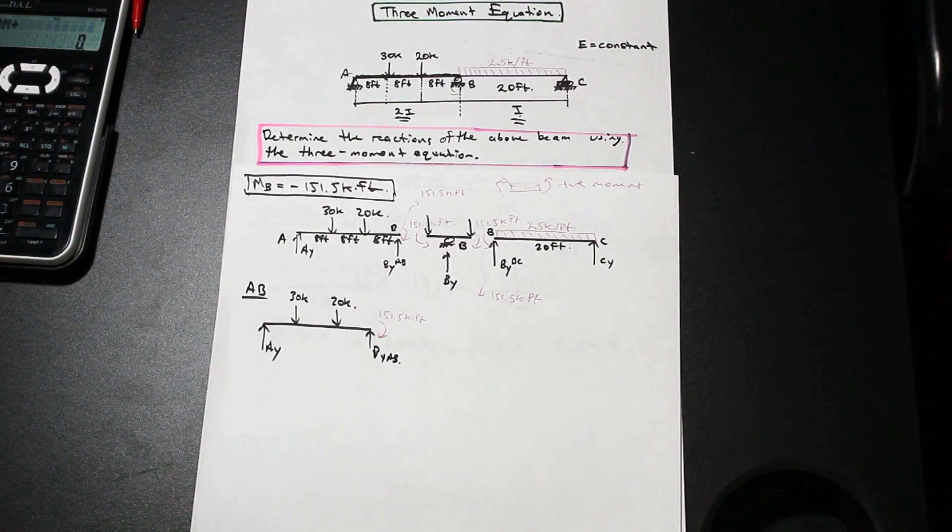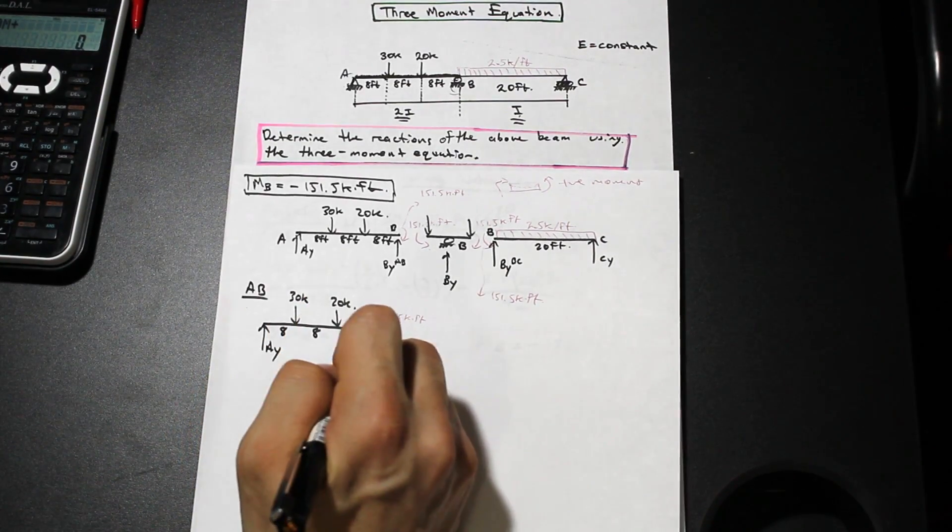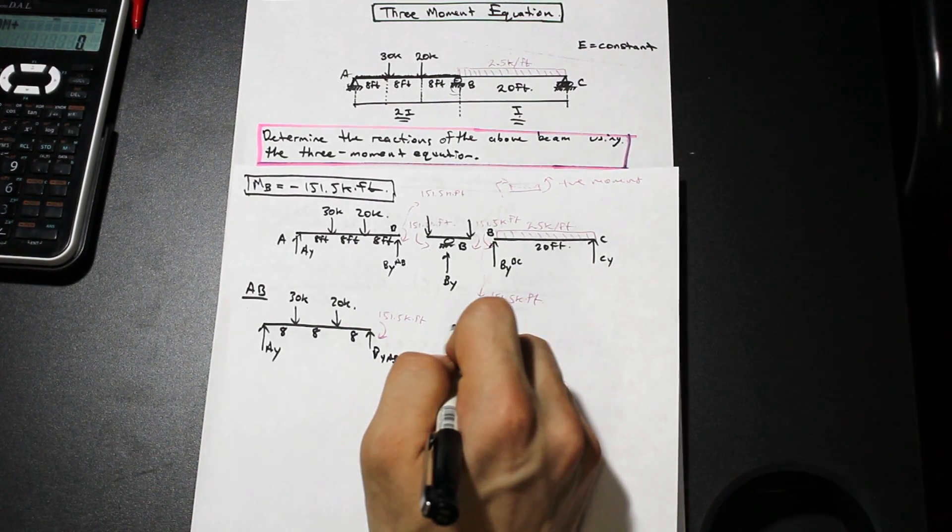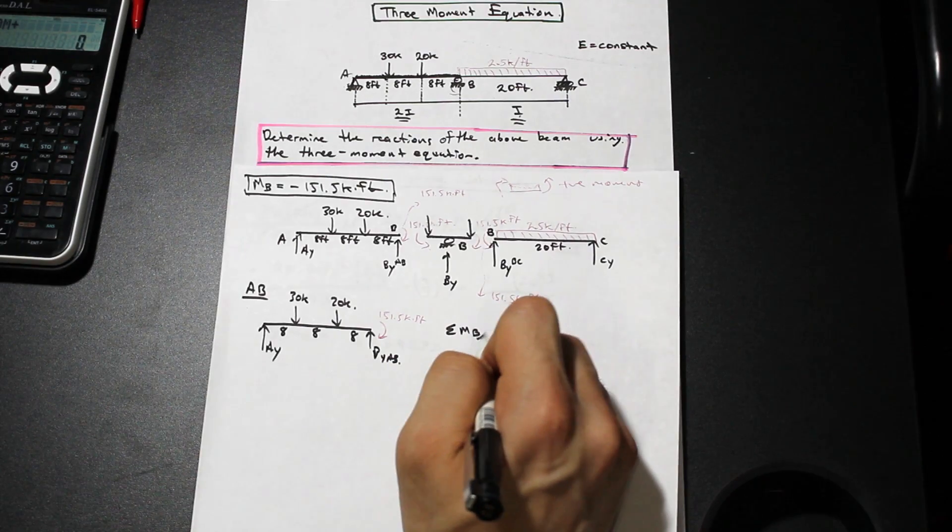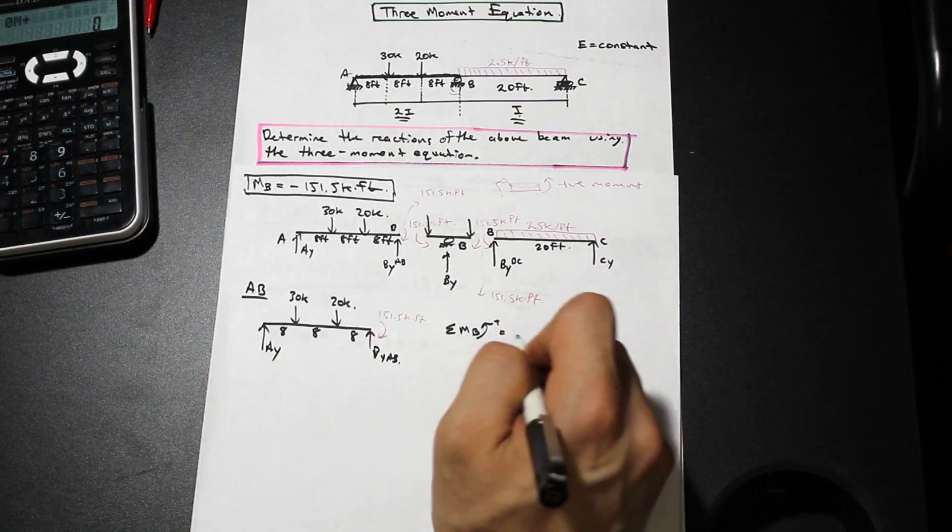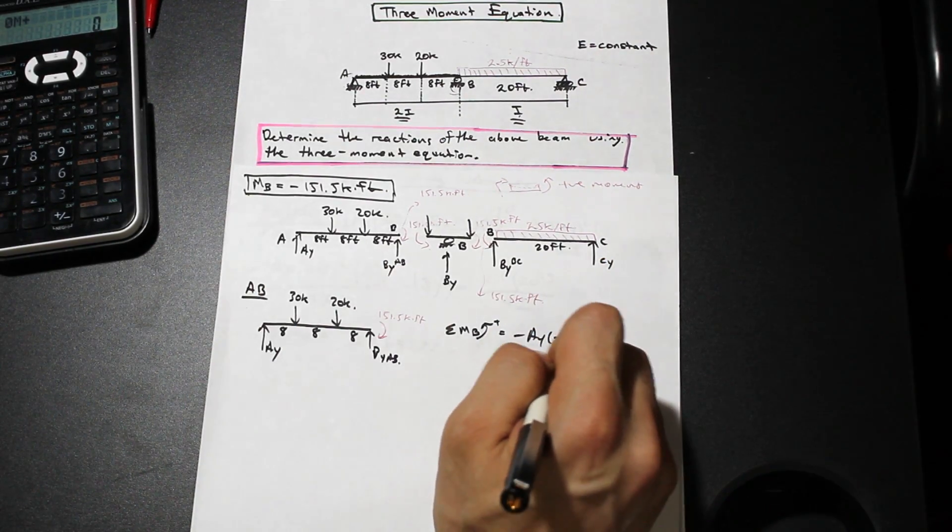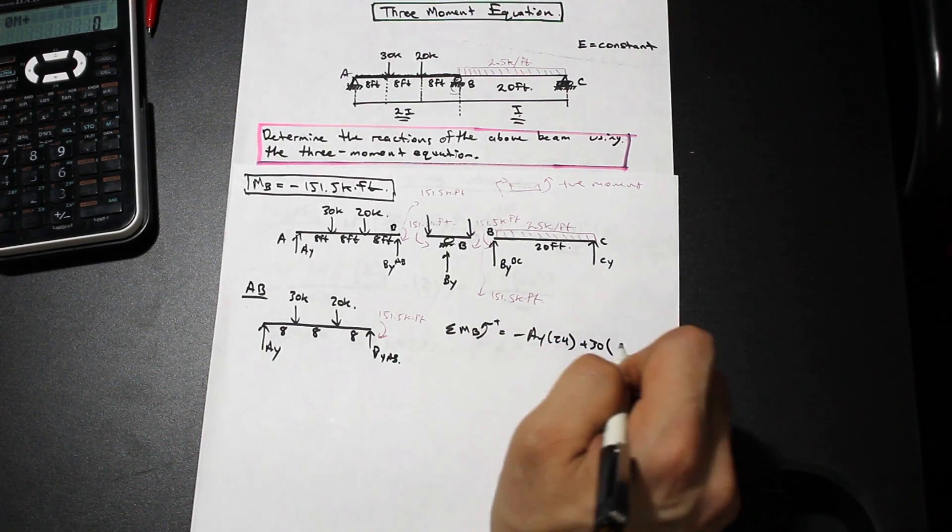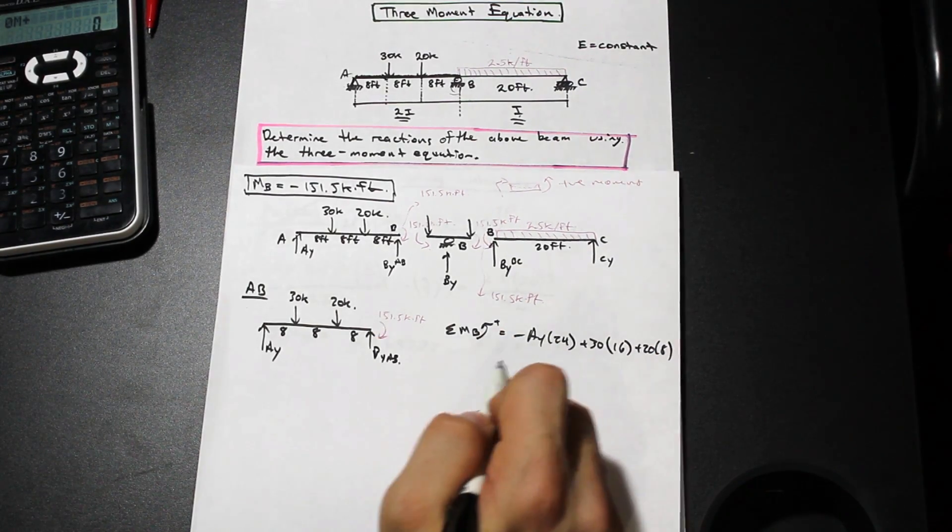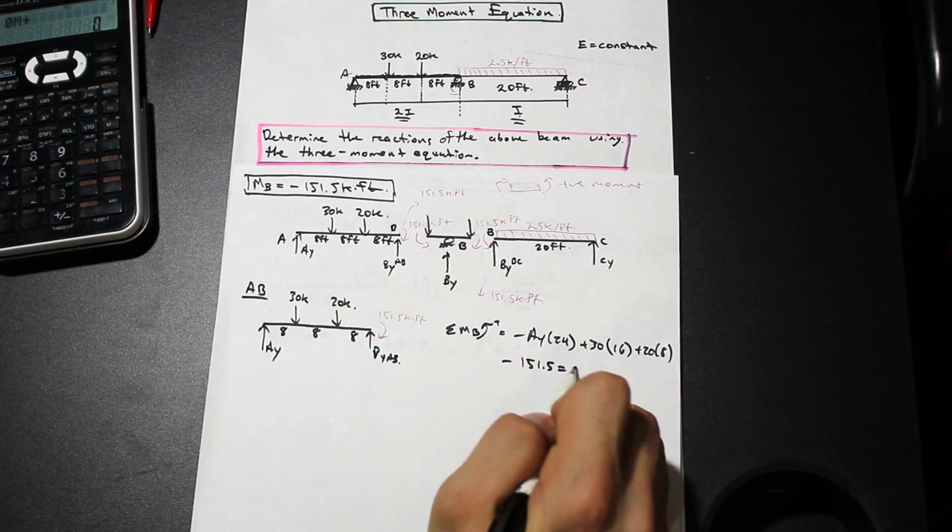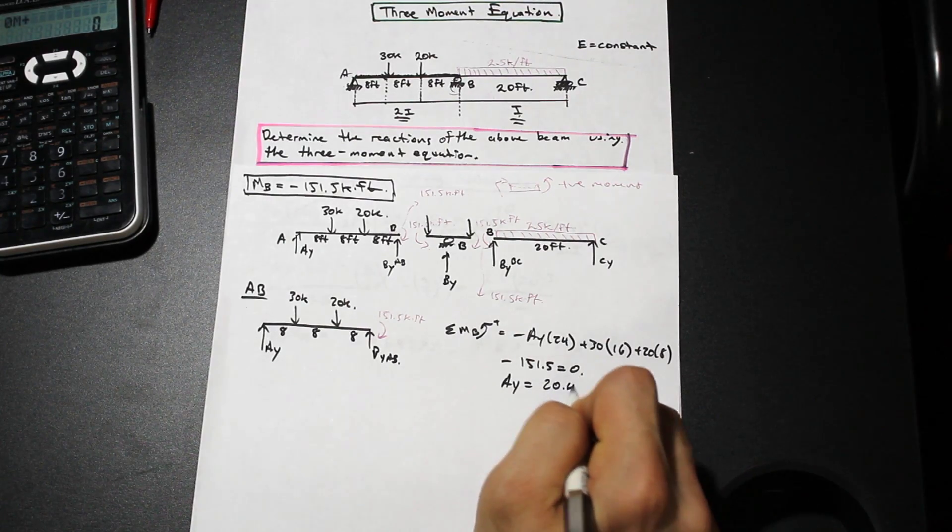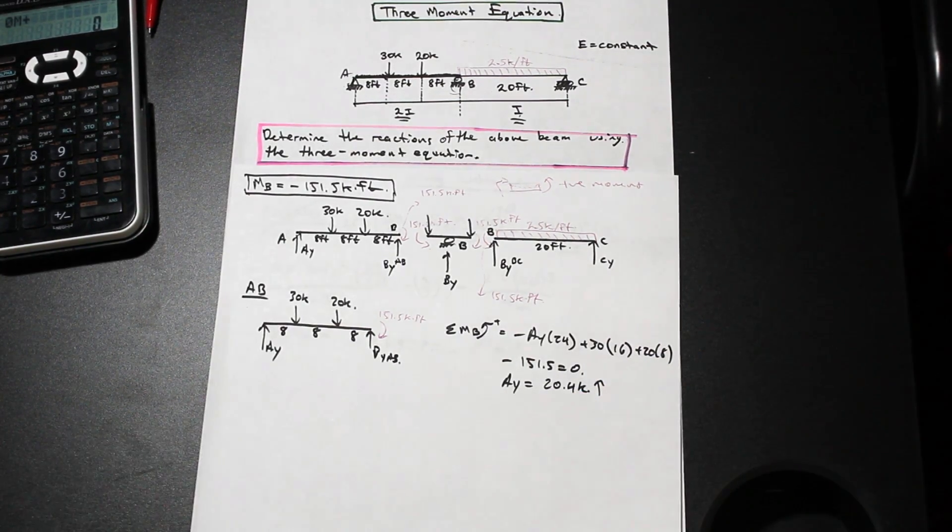What we can do now is we can solve for AY and then we can end up solving for BY. Let's take the moment about B. The moment about B here is simply going to be negative AY times 24 plus 30 times 16 plus 20 times 8 and then we have a negative 151.5 moment that's equal to zero. If we go ahead and solve for AY we should get a value of 20.4 kip and that is going to be up just as we assumed it to be.